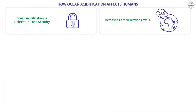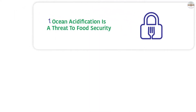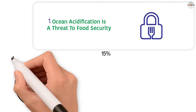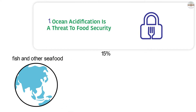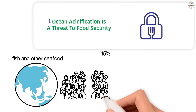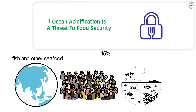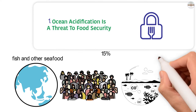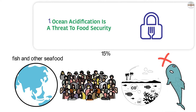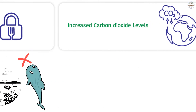How ocean acidification affects humans: the effects are both direct and indirect. Ocean acidification is a threat to food security, as humans get much of their food from the ocean. Over 15% of the protein people eat around the world comes from fish and other seafood. Ocean acidification is likely to cut the amount of seafood available. Because shellfish are hurt by ocean acidification, their numbers will go down, leaving no food for bigger fish. Everything in the food chain, including humans, is affected by changes in the ocean's acidity.